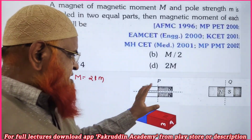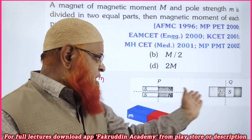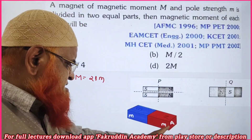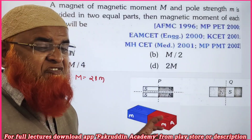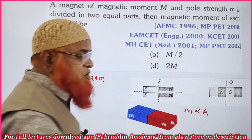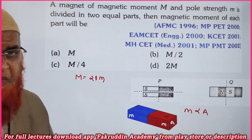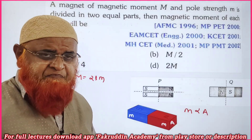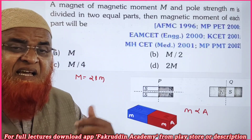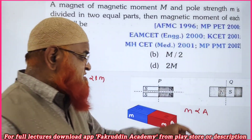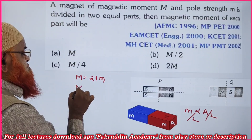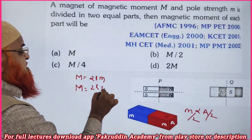It is given that if you take a magnet and cut it horizontally and vertically, what happens to the magnetic moment? You should remember that pole strength is always directly proportional to the area of cross section of a magnet. If you cut the magnet along the axial line, the area of cross section gets divided into half, so pole strength also gets divided into half.